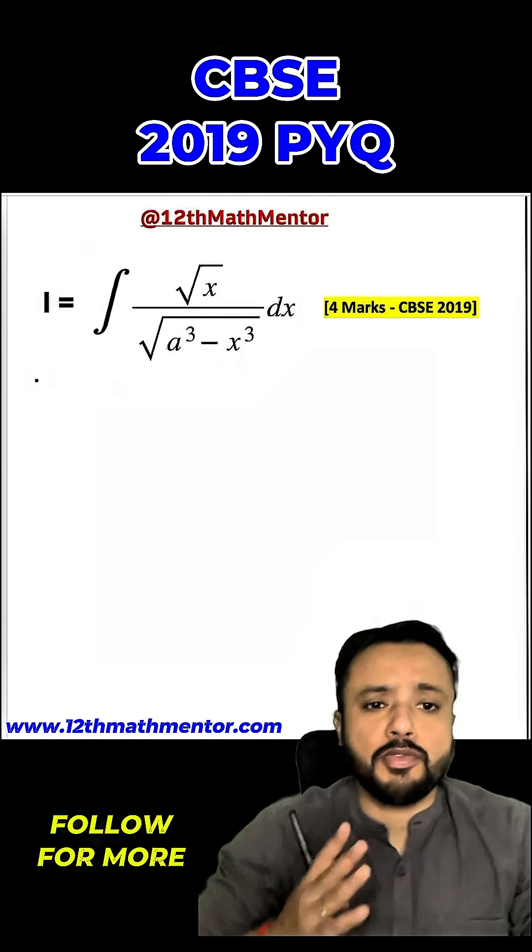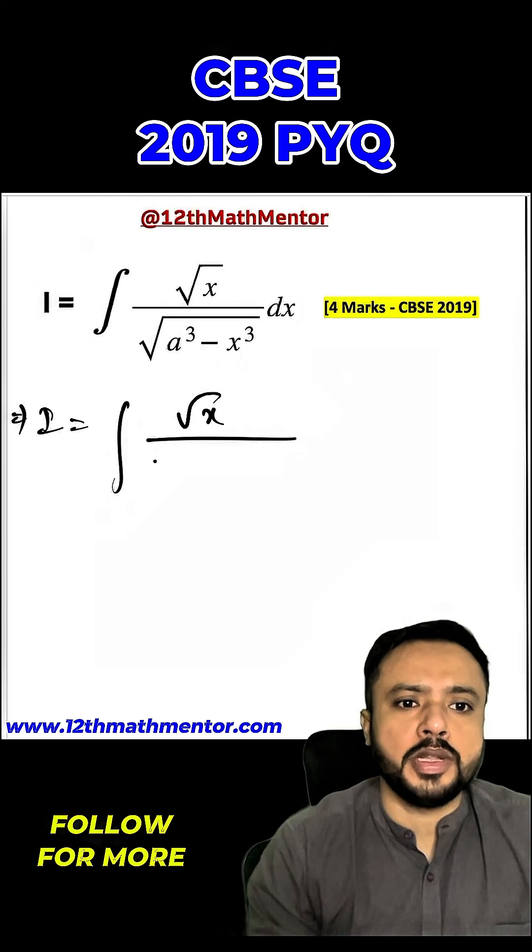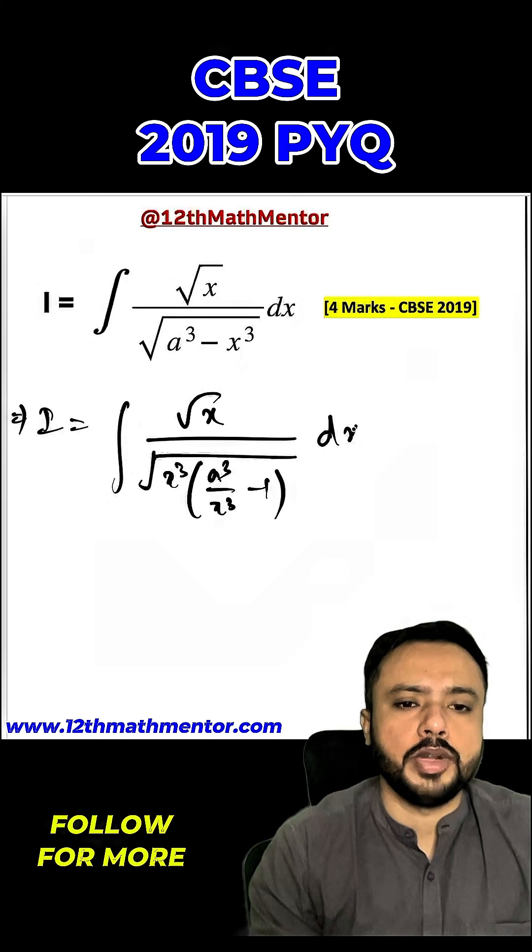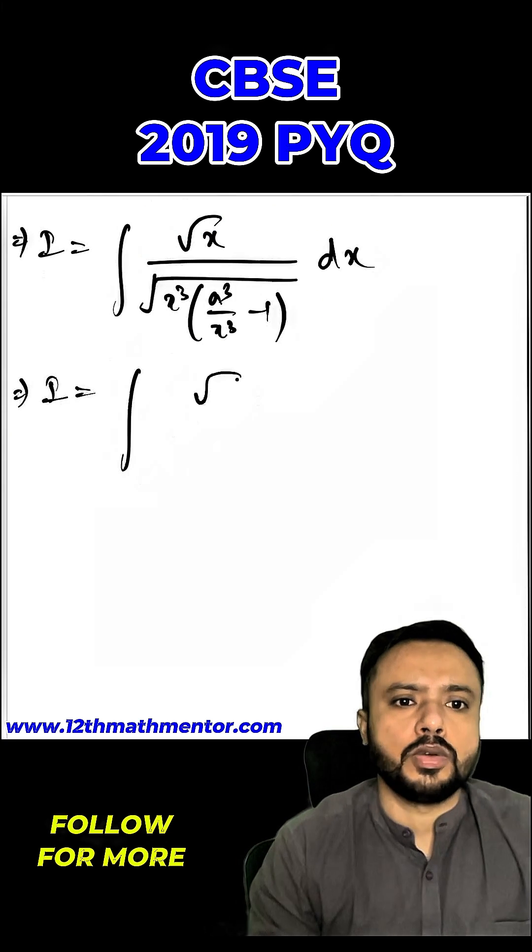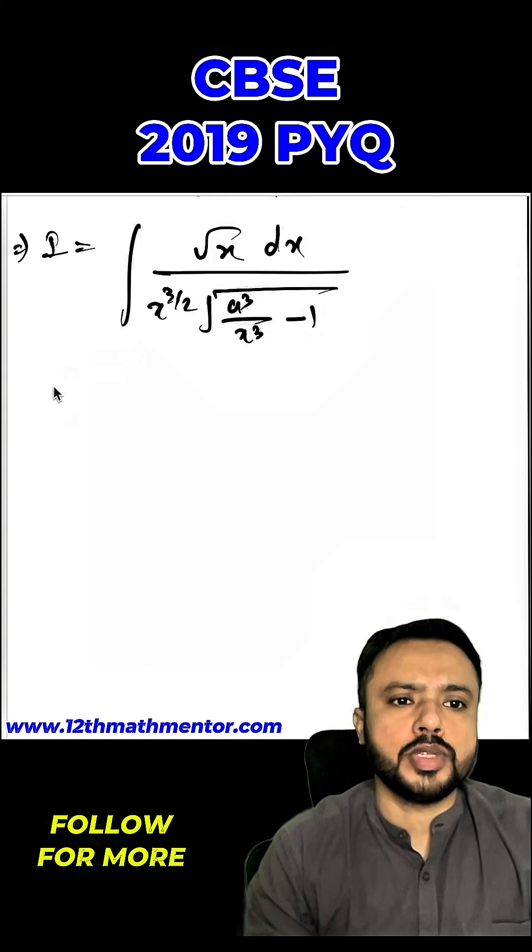I am going to take x cube common in the denominator, so which will be x cube times a cube upon x cube minus 1, into dx. So I can rewrite this integral as root x dx upon x raised to the power 3 by 2, root of a cube upon x cube minus 1.